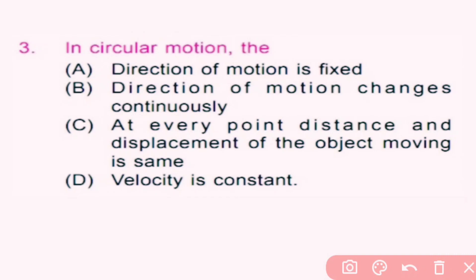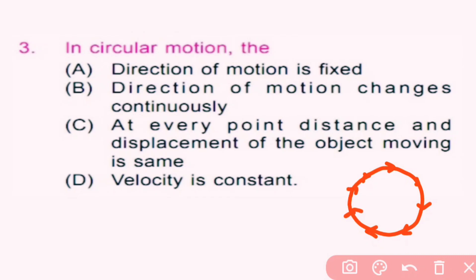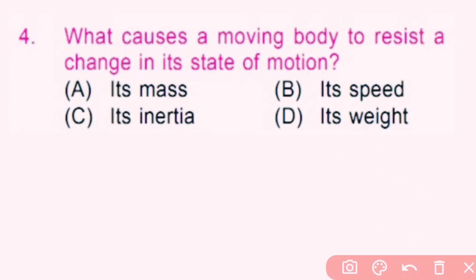Question number 3: In a circular motion, option A — the direction of motion is fixed; option B — direction of motion changes continuously; option C — at every point distance and displacement of the object moving is the same; option D — velocity is constant. When a body moves in a circular path, the direction of motion is not fixed, it changes continuously. If the direction changes, velocity also changes, and at each point the displacement is different. So only option B is correct.